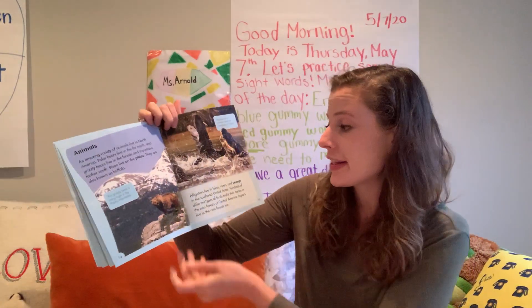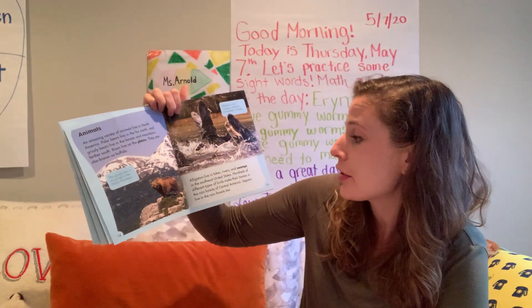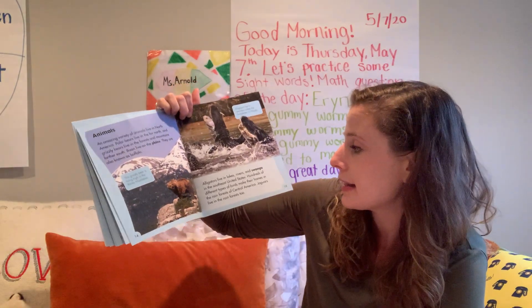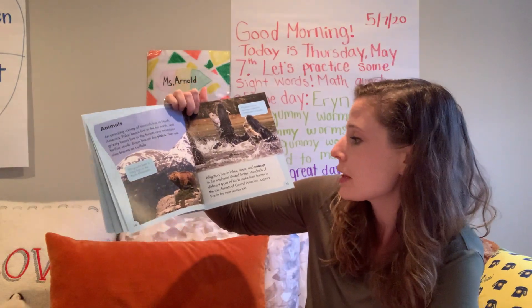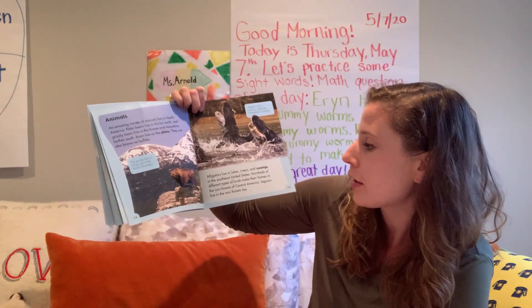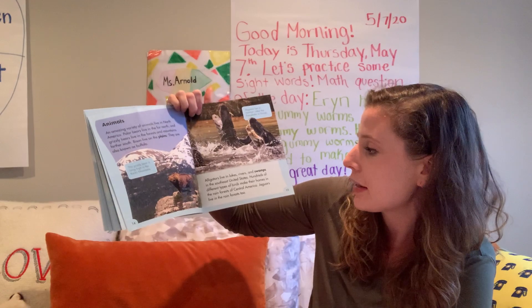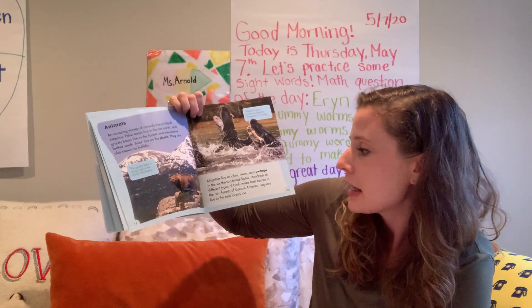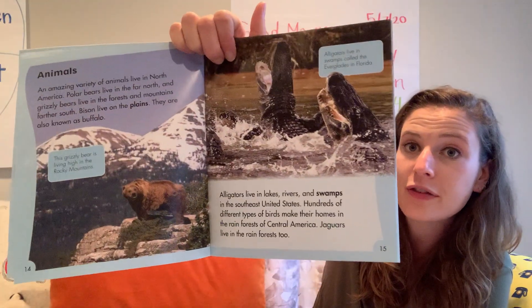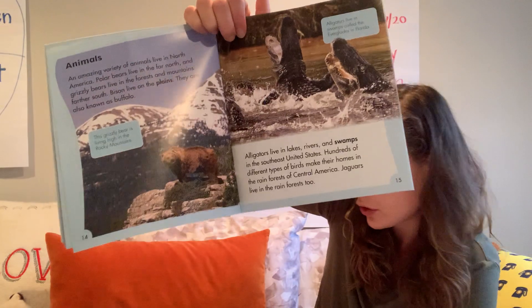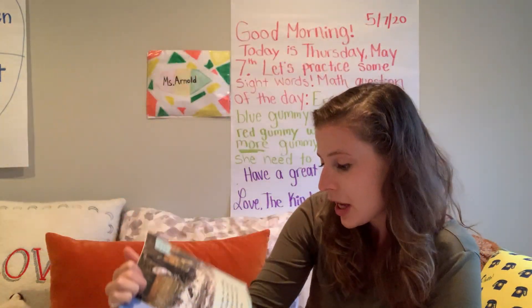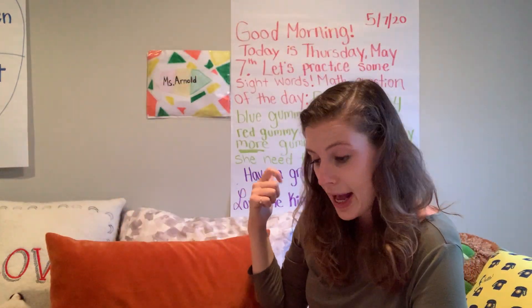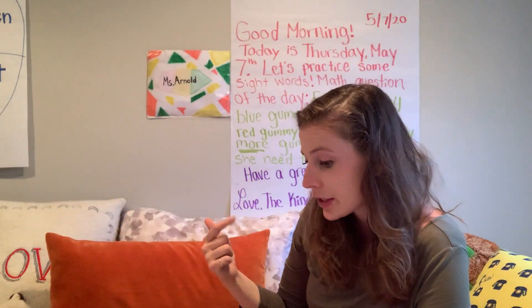Alligators live in lakes, rivers, and swamps in the southeast United States. Hundreds of different types of birds make their homes in the rainforests of Central America. Jaguars live in the rainforest too. So we could add jaguars and alligators.